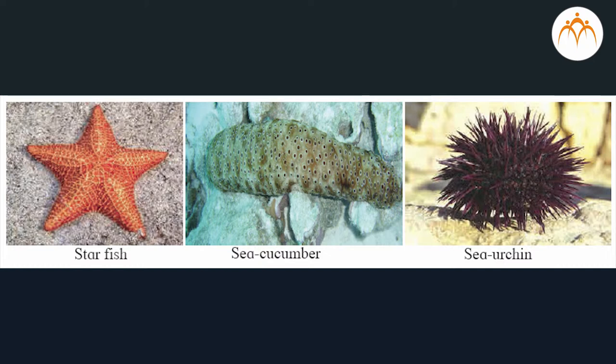Phylum Echinodermata: calcareous spines are present on the body of these animals, hence they are called echinoderms. These animals are found only in the ocean. Their body is triploblastic, eucoelomate, and radially symmetrical in the adult stage; however, they show bilateral symmetry in the larval stage. They perform locomotion with the help of tube feet.